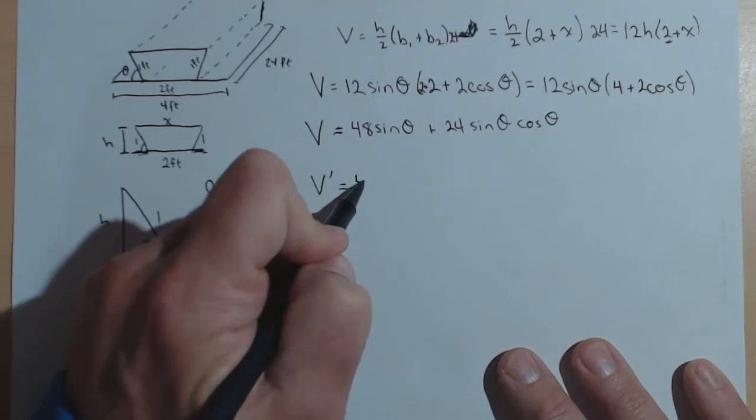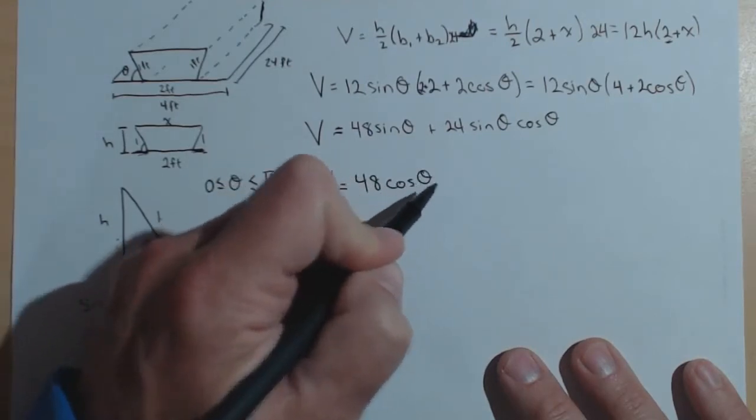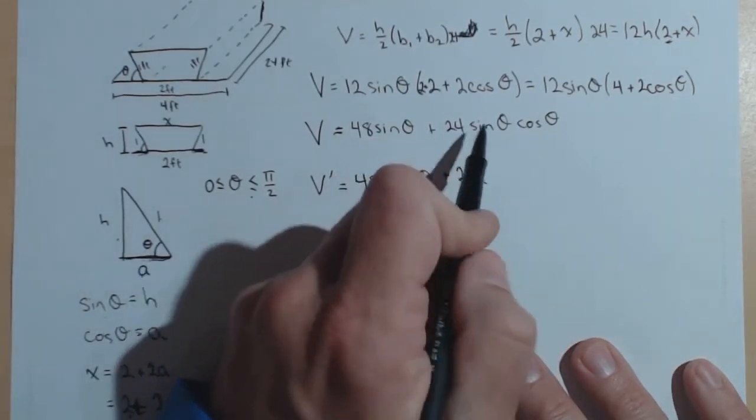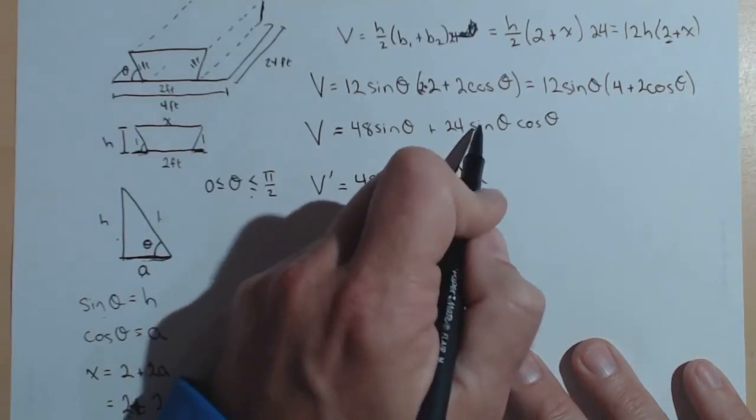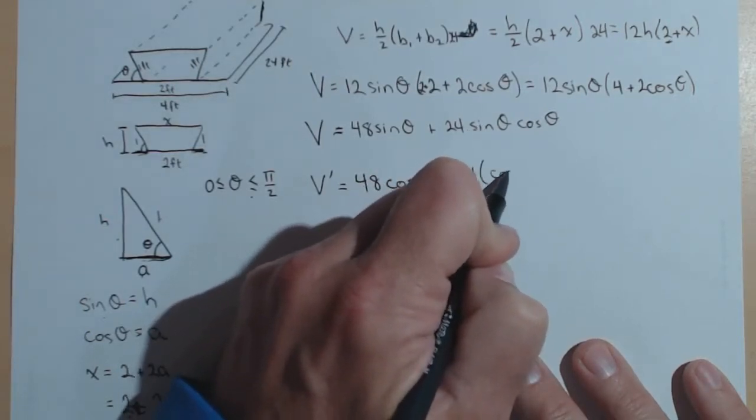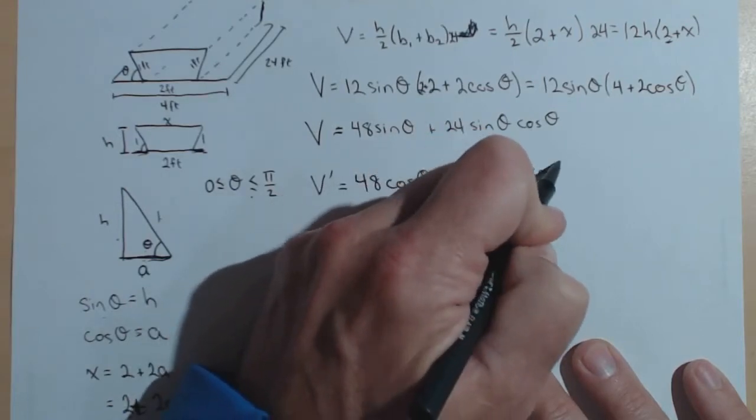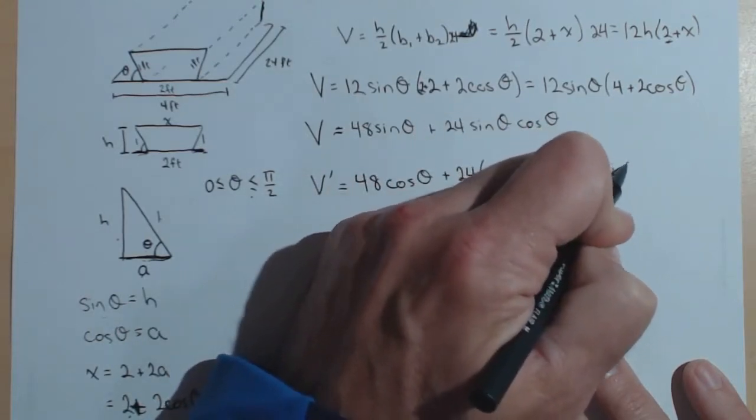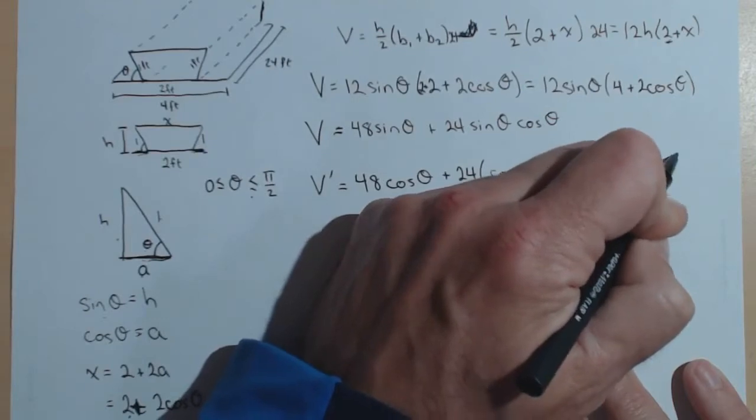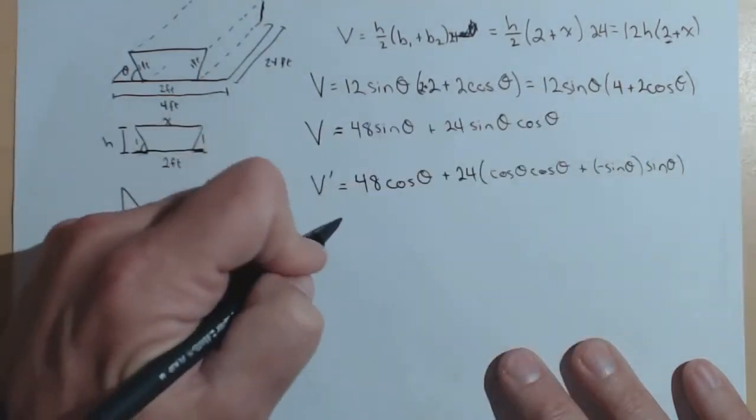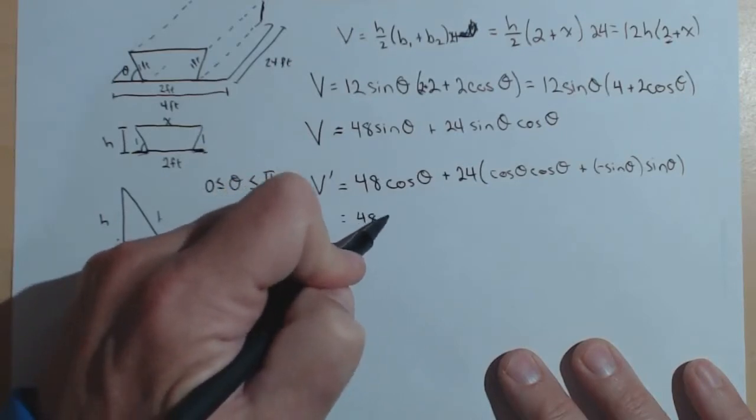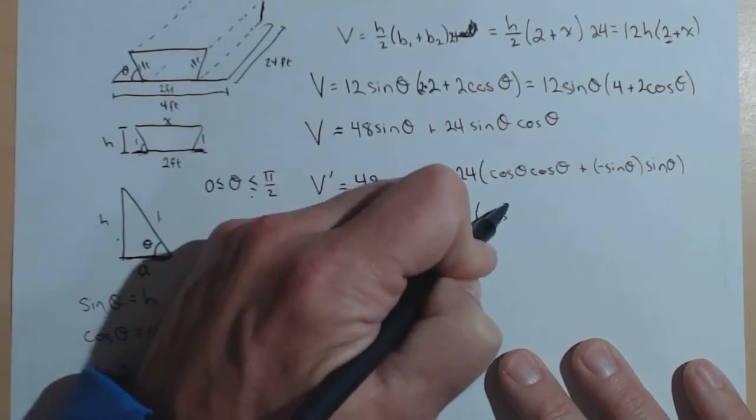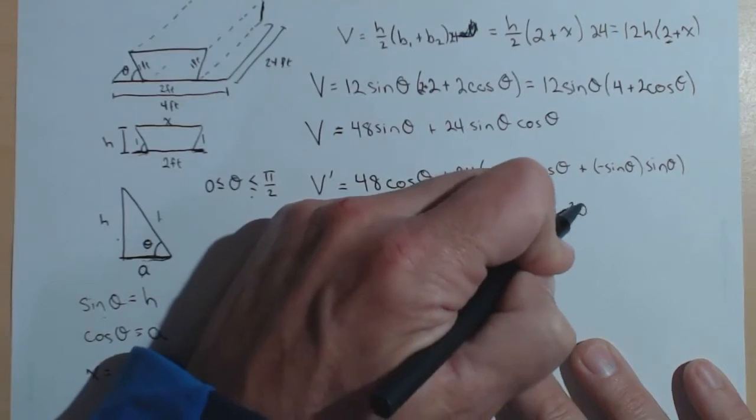V prime is 48 cosine of theta. Plus, I'm going to leave the 24 out and do a product rule on sine theta, cosine theta. So the derivative of sine theta, which is cosine theta, leave cosine theta alone. Plus, the derivative of cosine theta is negative sine theta, leaving sine theta alone. Putting this together, we've got 48 cosine theta plus 24 cosine squared theta minus sine squared theta.